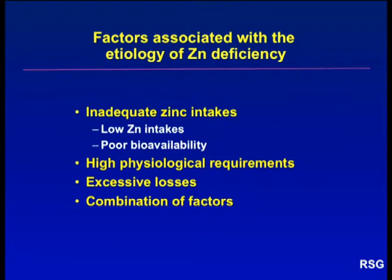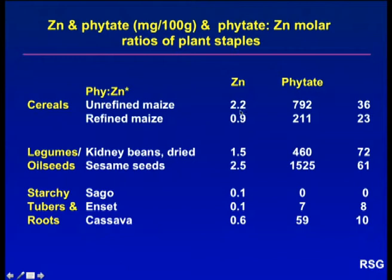In order to assess the adequacy of zinc intakes, it was necessary to analyse the zinc, the phytate — a potent inhibitor of zinc absorption — and the phytate zinc molar ratios of plant-based staples in the countries where we were working. Note the very high zinc content of unrefined maize compared to refined maize, but this is also accompanied by a very high content of phytate, resulting in a markedly high phytate zinc molar ratio. Notice the very high phytate zinc molar ratios in legumes and oilseeds compared to the much lower ratios in starchy tubers and roots, particularly sago — the staple in Papua New Guinea — and enset, the staple in the Sudama region of Ethiopia. But note also the negligible amount of zinc in these starchy roots and tubers.